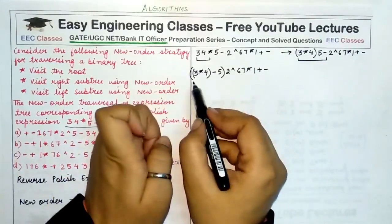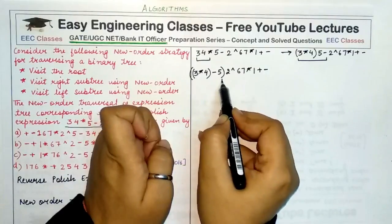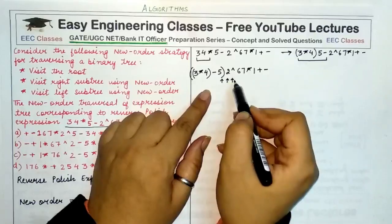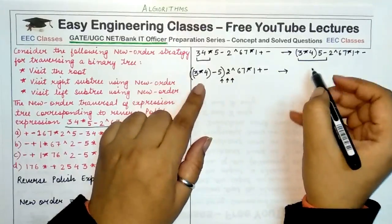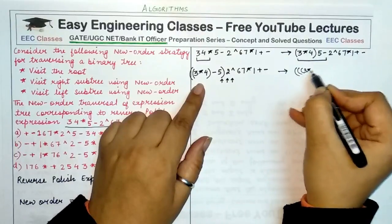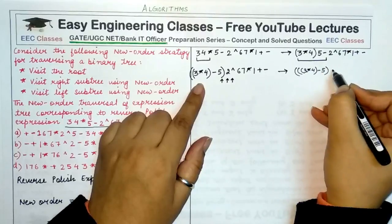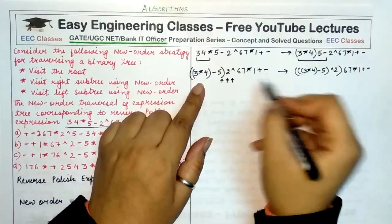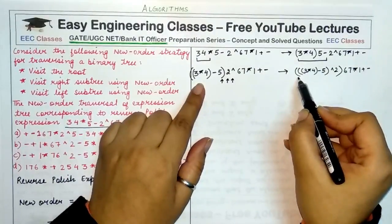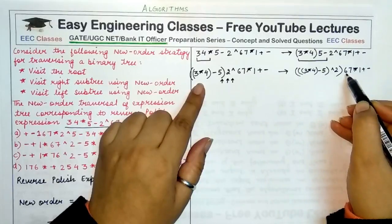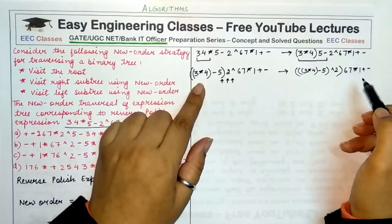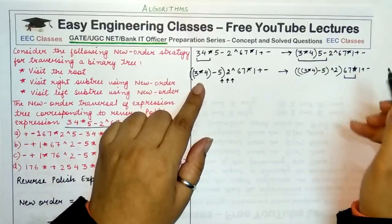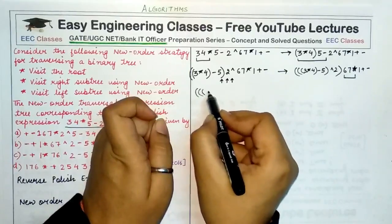Now consider the bracket (3 * 4 - 5) as the first operand, two as the second operand, and the exponentiation symbol as the operator. This gives ((3 * 4) - 5) ^ 2. Moving further, six and seven cannot form a complete sub-expression immediately with the next operator, so we group six into seven as (6 * 7) in a new bracket.